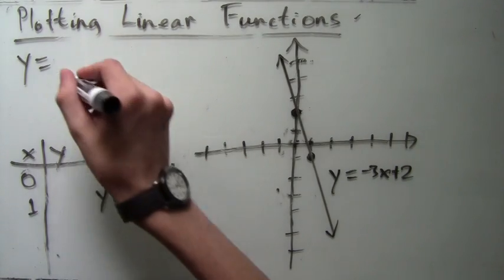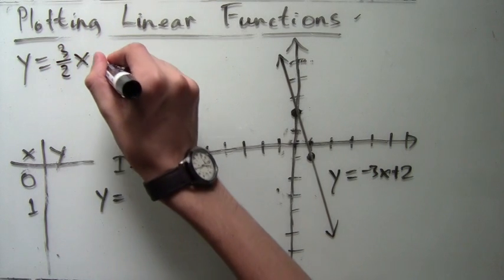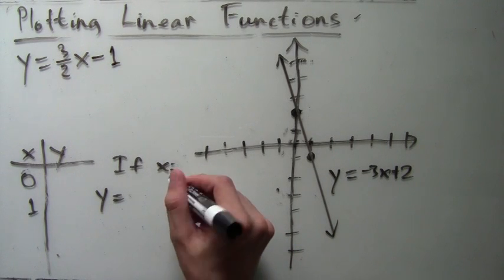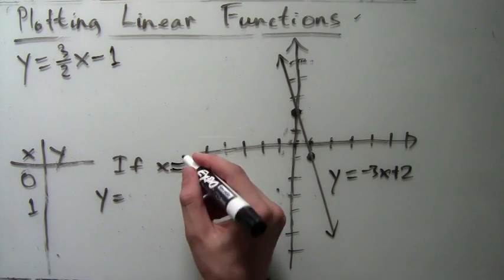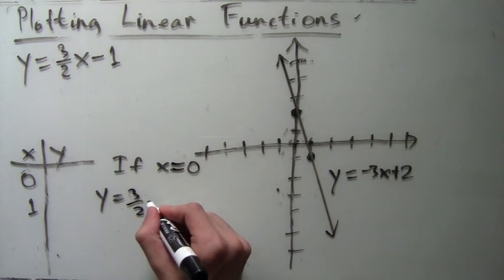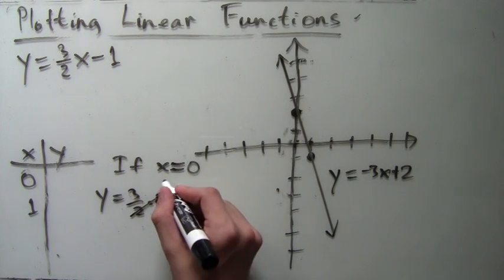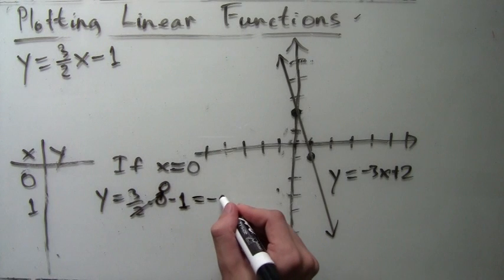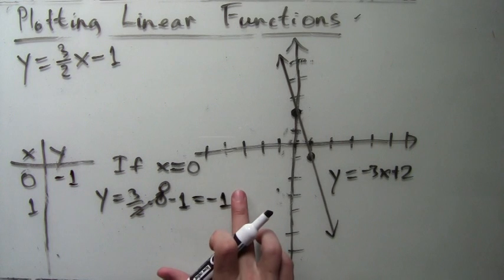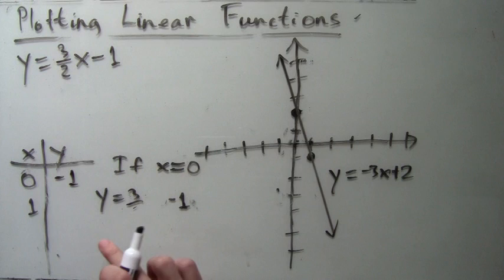This next example will have fractions in it. This time, y=(3/2)x-1. As usual, we plug in x equals 0 for our first point. If x equals 0, then of course, y equals (3/2) times 0 minus 1. In other words, y would equal -1. So we record this value and we move on to x equals 1.